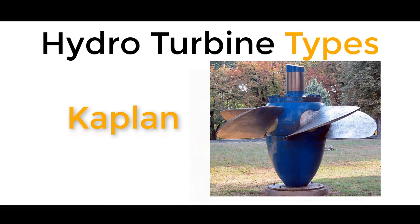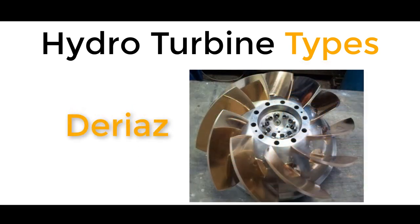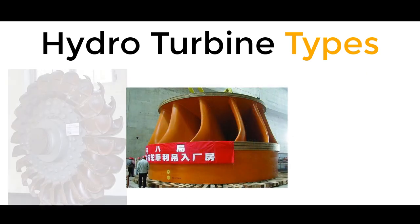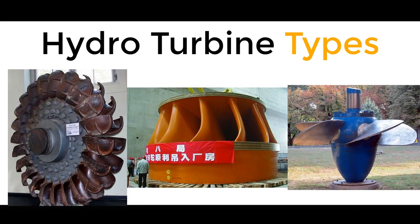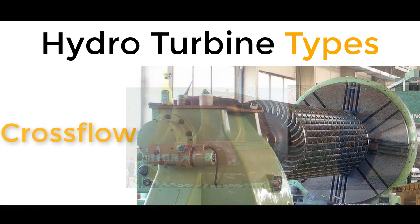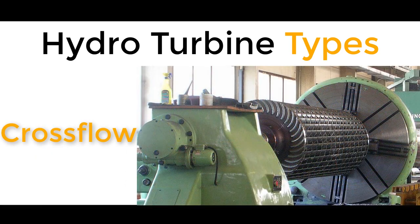Less common types of turbines include the Darius turbine, designed in the 1900s by Paul Deriaz, but this is not considered one of the main three types. You're much more likely to see the Francis, Pelton, or Kaplan turbine than the Darius turbine. Another sub-type is the cross-flow turbine, but again this does not belong to the main three.